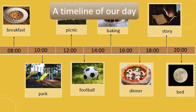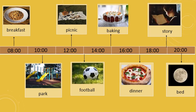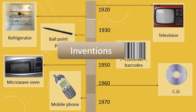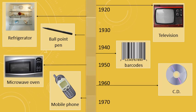This timeline shows what we did today. As this timeline covers only a short period of time, each section represents only two hours. This timeline shows the order in which some inventions were made, but it is presented vertically instead of horizontally. Each section represents a period of 10 years and is read from top to bottom.